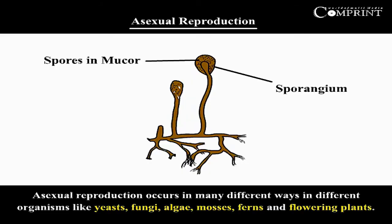Asexual Reproduction occurs in many different ways in different organisms like yeast, fungi, algae, mosses, ferns, and flowering plants.